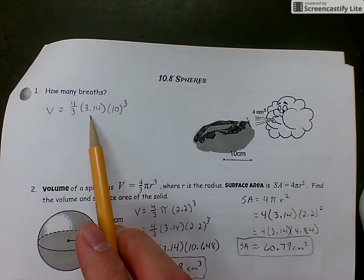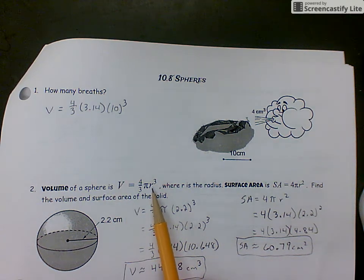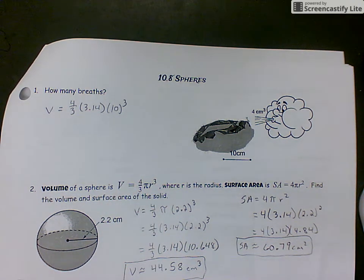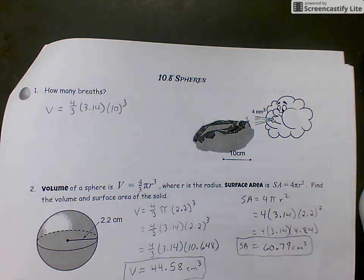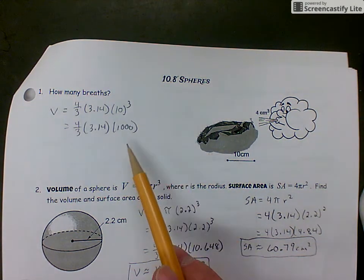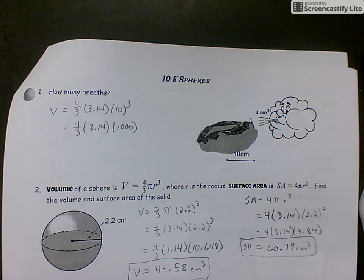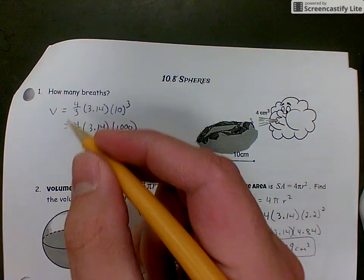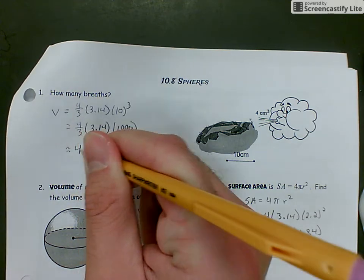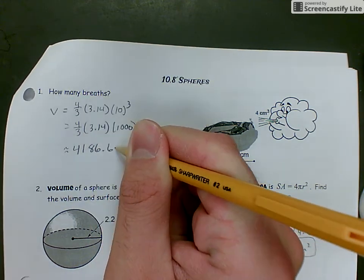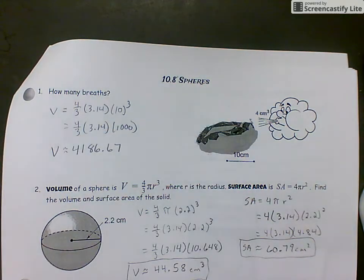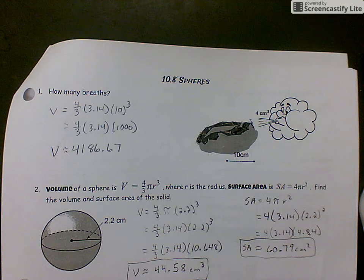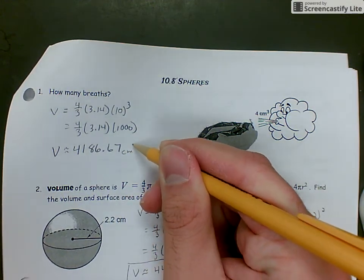We've got 4/3 × 3.14 × 10³. Order of operations first - 10 cubed is 1,000. Plug that into the calculator: 4 × 3.14 × 1,000 = 12,560 divided by 3 equals 4,186.67. So the volume of that beach ball is 4,186.67 cm³.